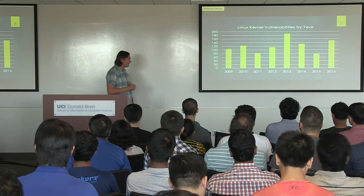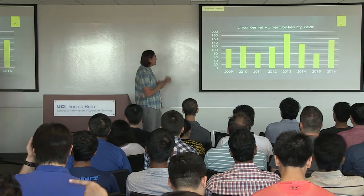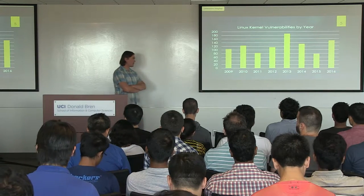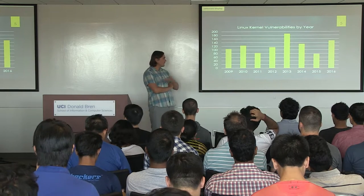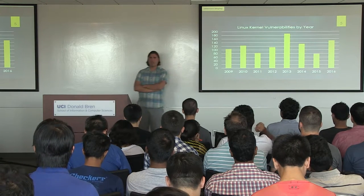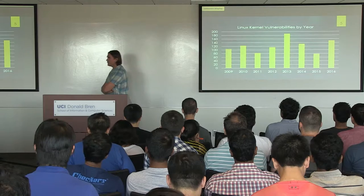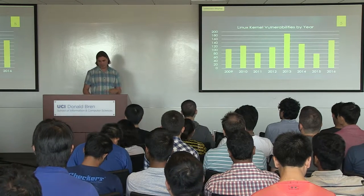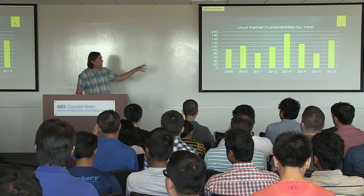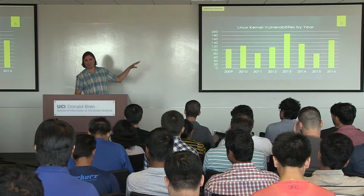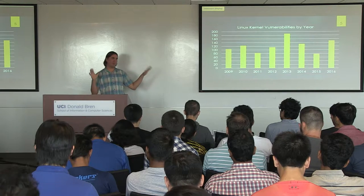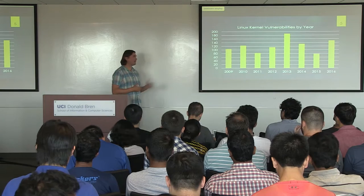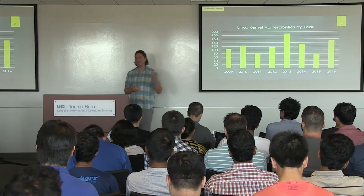This is the timeline of vulnerabilities found in the Linux kernel, reported by the Common Vulnerabilities Database. In 2016, up to that date, 151 vulnerabilities were found. The takeaway from this graph is that it doesn't go down. You might think that at some point systems are getting better, but in reality it goes up and down like a wave, but it doesn't go down.